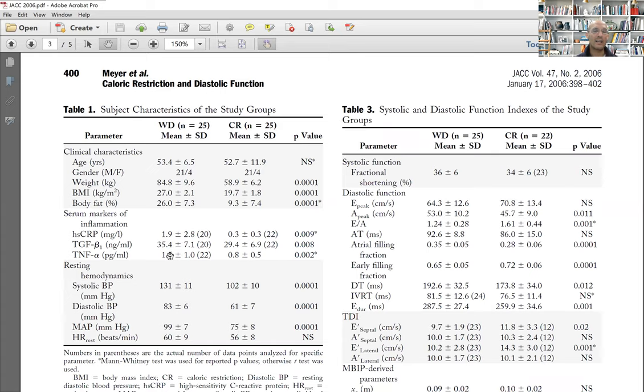And interestingly, in this paper, we show that plasma circulating TGF-beta-1, a powerful pro-fibrotic factor, is also significantly lower with a P of 0.008 than in the controls, suggesting that calorie restriction is lowering inflammation, is lowering fibrosis.